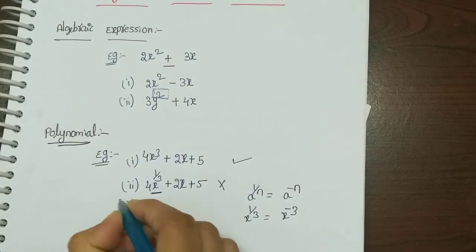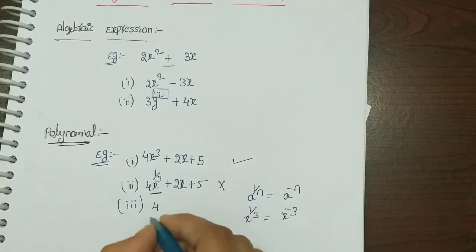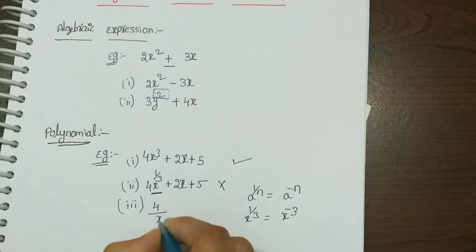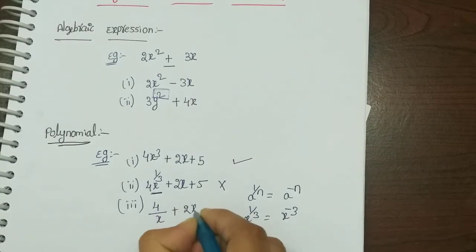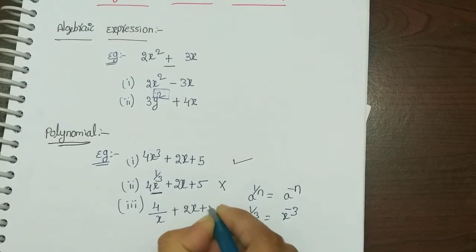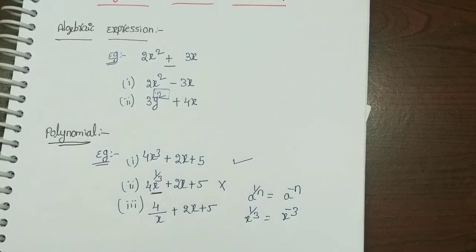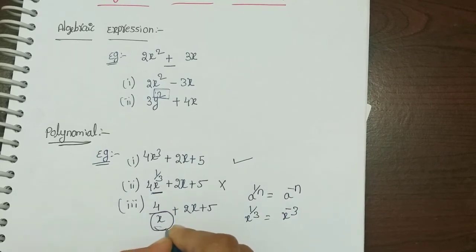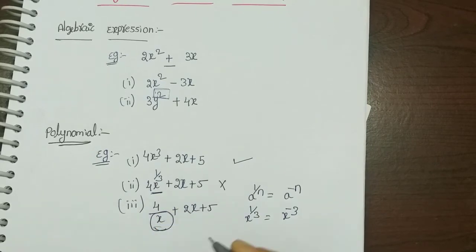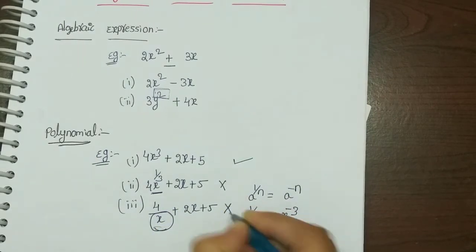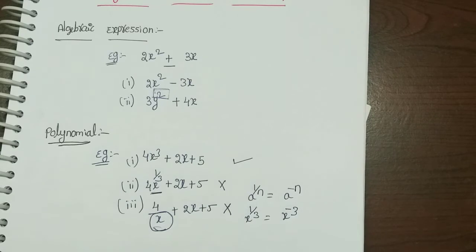Suppose we have a denominator, for example 4 divided by x plus 5. This is not a polynomial, because the variable is in the denominator.